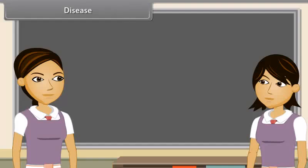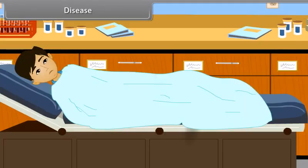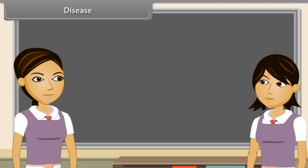Do you know that when we are unhealthy, then we are having one or more diseases? I have read that disease means disturbed ease. Scientifically, disease can be defined as a disordered or incorrectly functioning organ, part, structure or system of the body resulting from the effect of genetic or developmental errors, infection, poisons, nutritional deficiency or imbalance, toxicity or unfavorable environmental factors — illness, sickness, ailment.